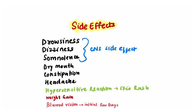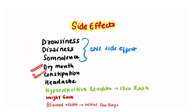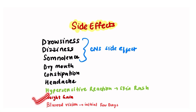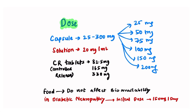There are certain side effects of this drug. Since it acts on nerves, there are CNS side effects like drowsiness, dizziness, and somnolence. Other side effects include dry mouth, constipation, and headache. Hypersensitivity reactions and skin rashes can also occur. On long-term use, an important side effect is weight gain. In the initial days after starting pregabalin, blurred vision can also be seen.